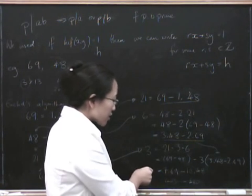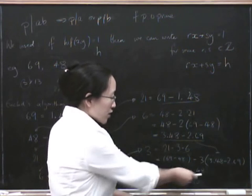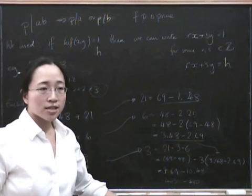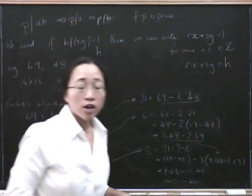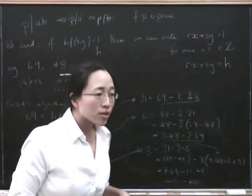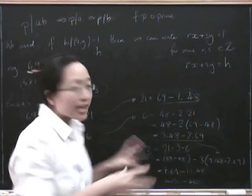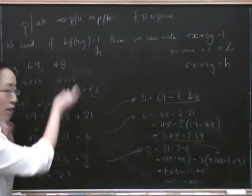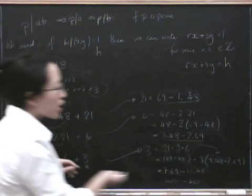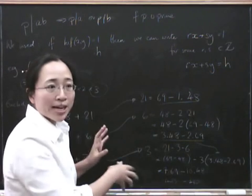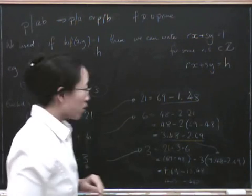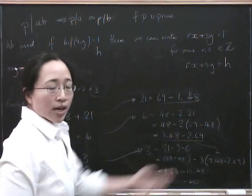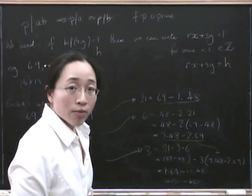So we've got ourselves an expression of the highest common factor of 69 and 48 in terms of a combination of 69 and 48. I hope you can now see that you would be able to do this for any numbers and their highest common factor. You start by running Euclid's algorithm forwards, and then you plug the numbers back in going backwards to produce the result at the end. And this is quite useful for some things.